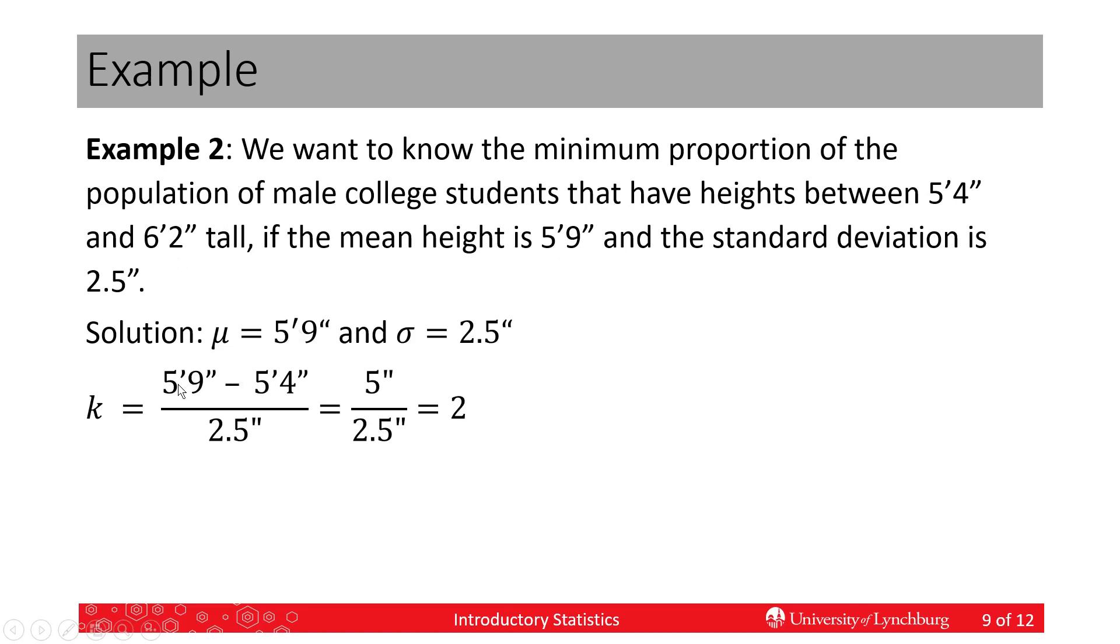And so, in this case, I chose the mean minus the lower value, which gives me 5 inches. If I took 6'2" minus 5'9", the upper minus the mean, I'm still going to get 5 inches. And then we divide by our standard deviation. And again, inches divided by inches, those cancel, and I get 2.